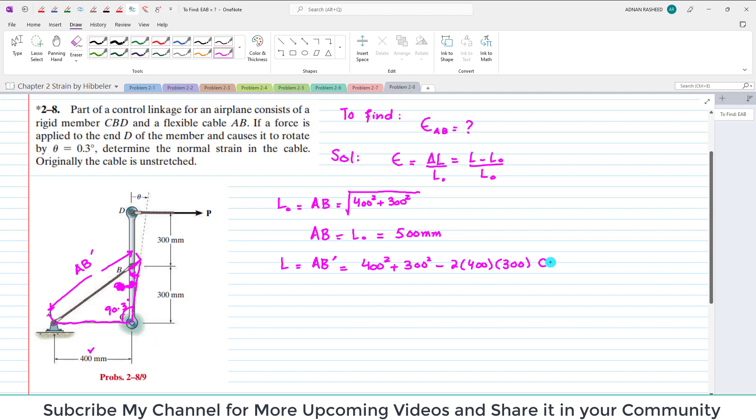So cosine of 90.3 degrees under the root will give you the new length. This new length L is equal to AB dash, which equals 501.255 millimeters.